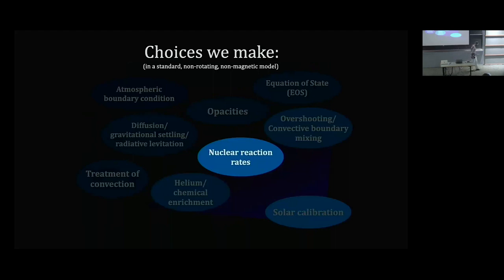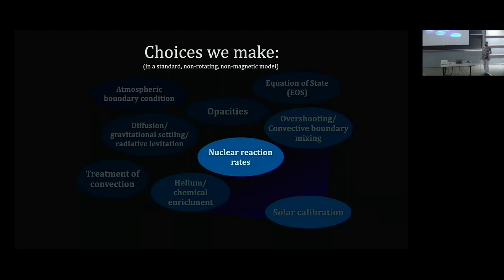Nuclear reaction rates: again there are only a couple of well-known compilations to choose from. You make choices both about the rates you assume and the network you track — the more elements you track the more expensive the computation. A solar-mass model can run with a very lean network; more massive stars require much more complicated networks. Even for the Sun, people adopt some compilation but often swap out the rate for 14N to 15O burning — the rate-limiting step in the CNO cycle. There have been major revisions to its astrophysical cross-section in the last decade and a half, and different groups make different choices about which measurement of that rate to use.